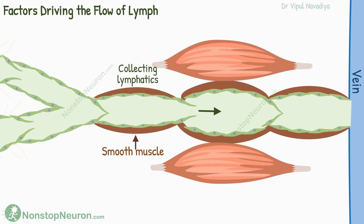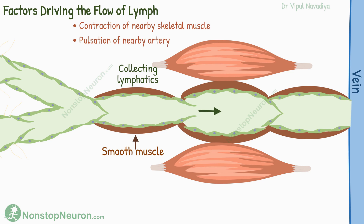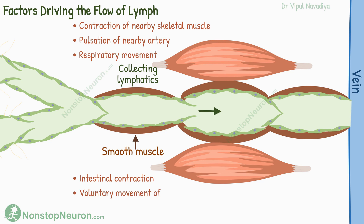Such intermittent compressions can come from multiple sources: contraction of nearby skeletal muscle, pulsation of a nearby artery, respiratory movement, intestinal contraction, voluntary movement of body parts, and even compression of tissue by an object outside the body.